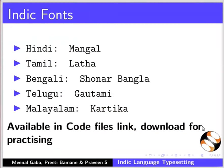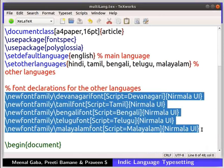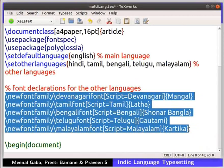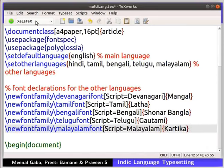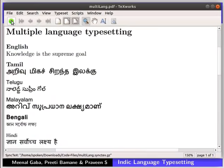For this part of the demonstration, I will be using these fonts for the respective languages. The same is available in the code files link. Download and install them as explained earlier in this tutorial before proceeding further. I have already installed these fonts on my machine. In the multilang.tech file, update the font declaration as shown here. In this example, I am declaring different fonts for different languages. Let us compile this file to see the output. Make sure the compiler is set to Z LaTeX at the top. Observe that there is no change in the output other than the font style. So, using any one of these methods, one can typeset Indic languages in a LaTeX document.